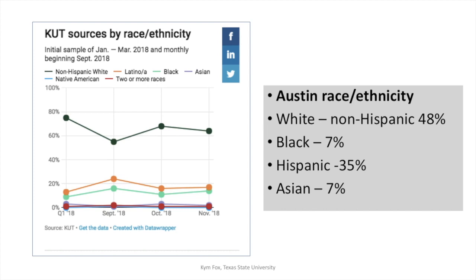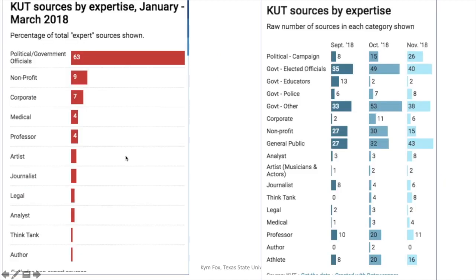This is not uncommon — I've seen these audit reports done by other media outlets, and there are many reasons for it. But bringing awareness can help improve coverage. One thing that happens in Austin is a lot of political coverage, and the early reports showed that 63% of expert sources — people considered experts for a story — were in government. That's a huge number. Austin is the seat of state government, but when you primarily go to government for experts, that leads you back to the gender and race or ethnicity issue.